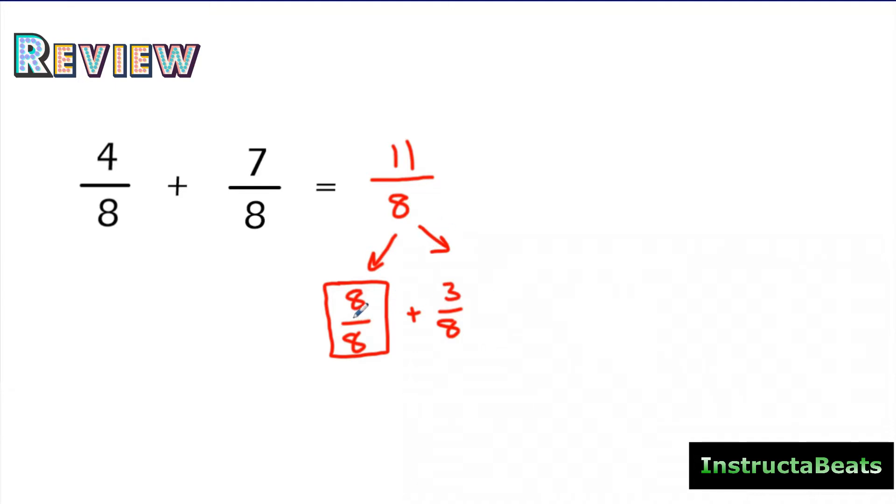And so my mixed number is 1 whole, right, because I pulled out 1 whole, with 3/8 left over. So 4/8 plus 7/8 equals 11/8, or 1 and 3/8. That is the same knowledge you're going to be using today to subtract fractions.